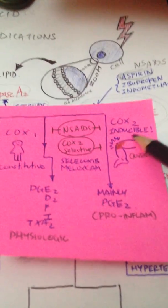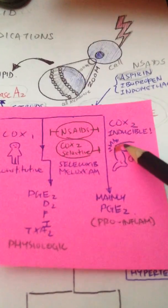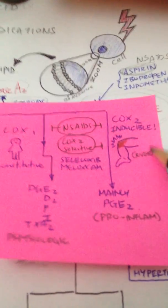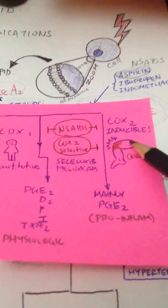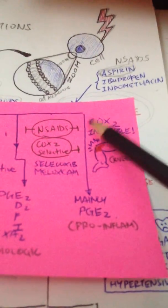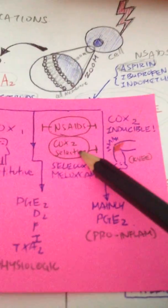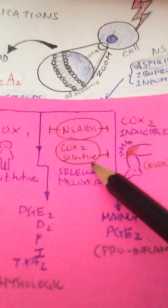COX-2 is inducible and is present more in places where we are actively having inflammation. In this case, I've illustrated like a knee, maybe rheumatoid arthritis or osteoarthritis, and you'll find lots of COX-2 receptors there. Those COX-2 selective drugs would actually act on the places where COX-2 are more abundant.